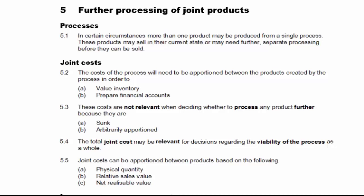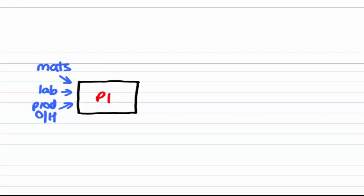Section 5 is all about further processing of joint products. In order to fully understand this section and the decision we're going to look at shortly, we need to think about some brought forward knowledge to begin with. This section involves you knowing a little bit about process costing. So let's just imagine that we've got one process that we'll call P1. Now a number of different costs are going to go into that process: materials, labour, and production overheads.